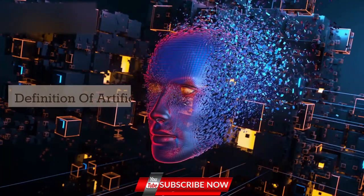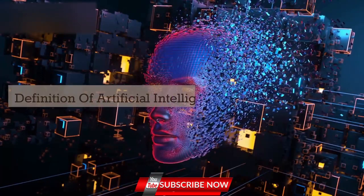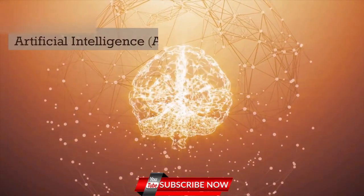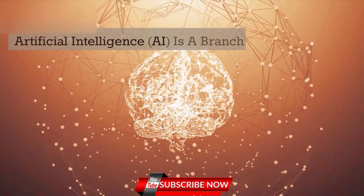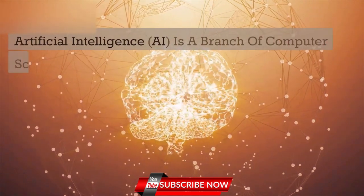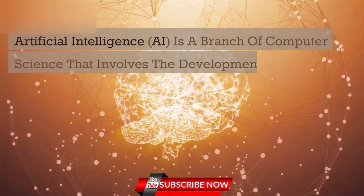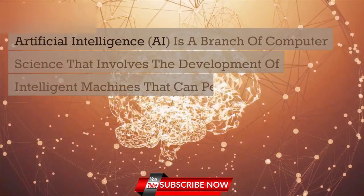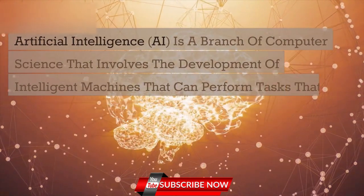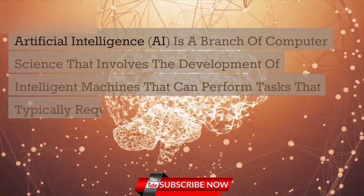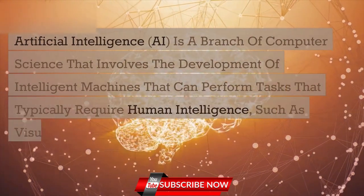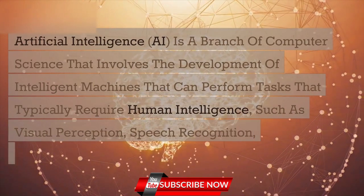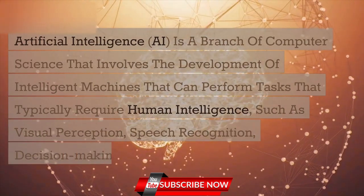Definition of artificial intelligence AI. Artificial intelligence AI is a branch of computer science that involves the development of intelligent machines that can perform tasks that typically require human intelligence, such as visual perception, speech recognition, decision making, and language translation.